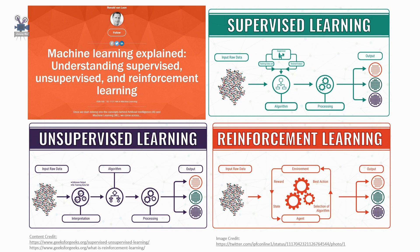The image in the previous slide shows a robot, a diamond, and fire. The goal of the robot is to get the reward — the diamond — and avoid the hurdles, which are the fire. The robot learns by trying all possible paths and then choosing the path which gives it the reward with the least hurdles. Each right step gives the robot a reward, and each wrong step subtracts the reward. The total reward is calculated when it reaches the diamond.